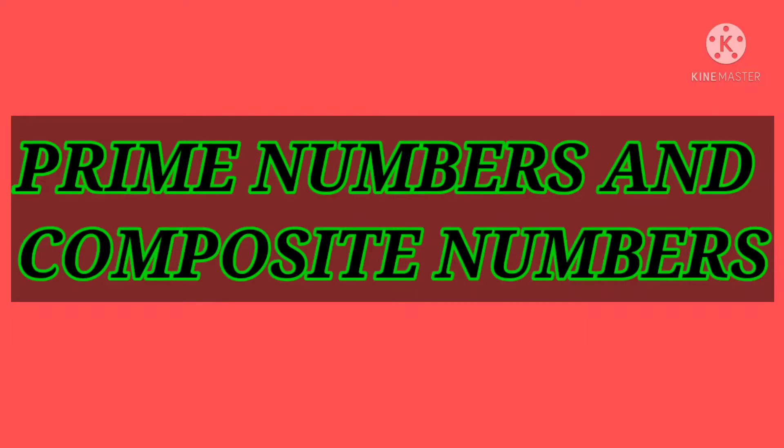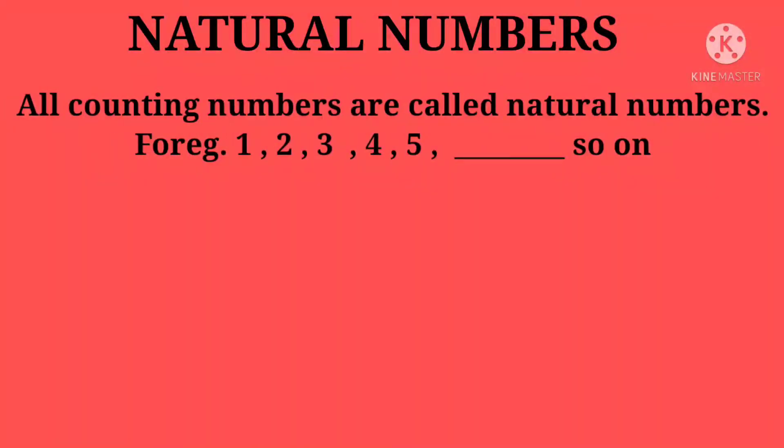Before starting the topic, let's understand natural numbers. All counting numbers are called natural numbers. For example, 1, 2, 3, 4, 5 and so on.